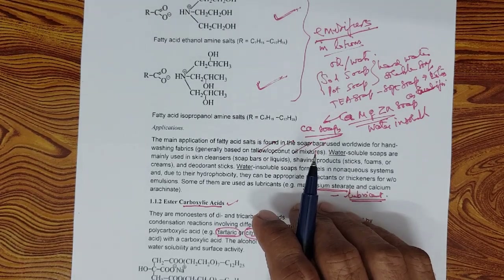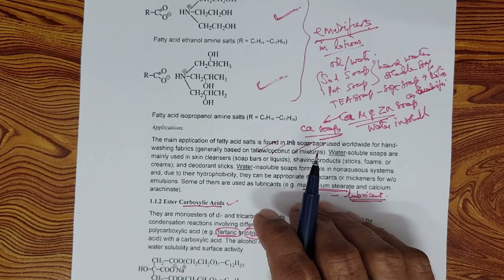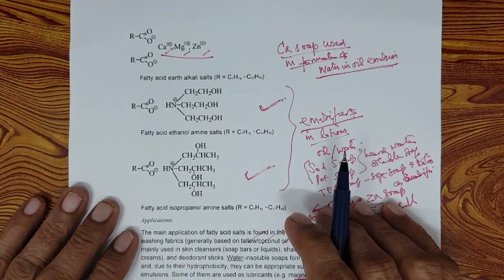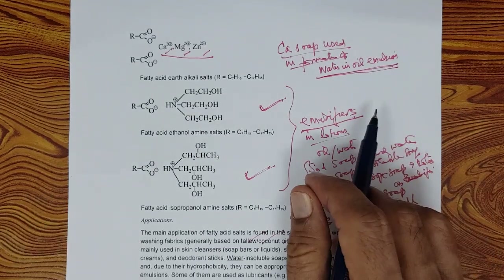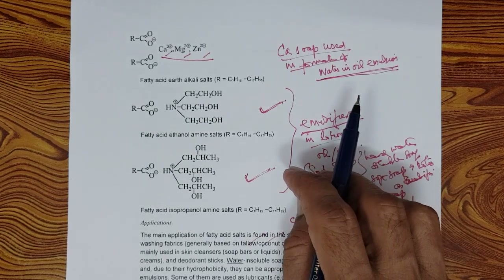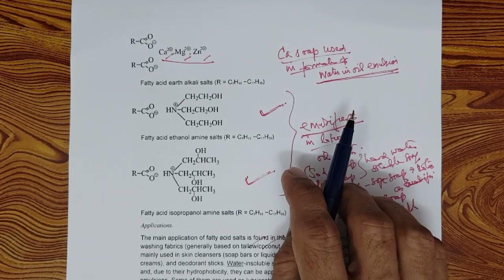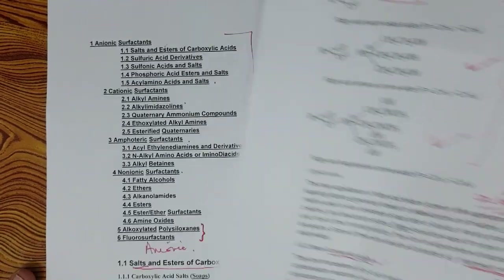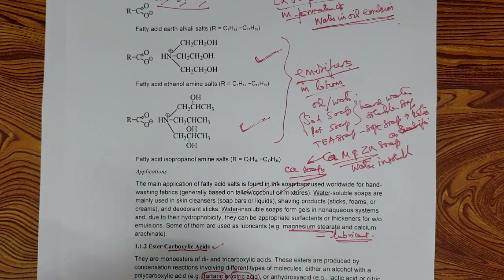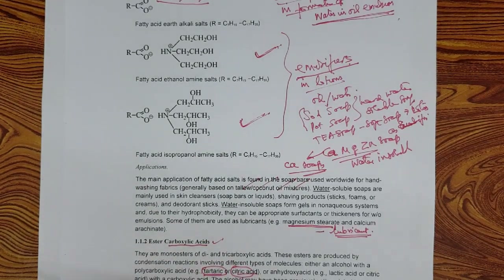Sodium, potassium, triethanolamine, and isopropanolamine soaps are all water-soluble soaps. Whereas calcium, magnesium, and zinc soaps are water-insoluble. Calcium soap is used in the formation of water-in-oil emulsions, while sodium, potassium, and triethanolamine soaps form oil-in-water emulsions. The main application of salts of carboxylic acids — plain soaps — is cleansing and as emulsifiers.